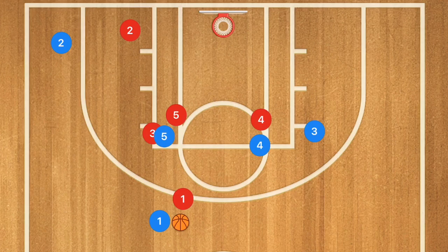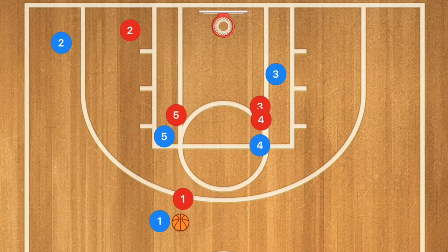The benefit to this play is that player 3 can also continue out. Let's say he was covered and wasn't open — player 2 can then go up and use the double screen as well, setting up a shot for the three, mid-range, or again a layup.